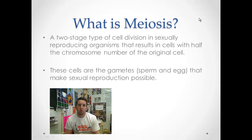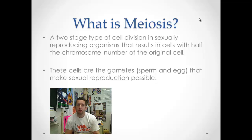Let's establish a working definition for meiosis: a two-stage type of cell division in sexually reproducing organisms that results in cells with half the chromosome number of the original cell. We start with a germ cell — in humans, that germ cell is diploid with 46 chromosomes. We end up with gametes that have half that number, 23 chromosomes. In males, these are sperm; in females, eggs — the cells that make sexual reproduction possible.